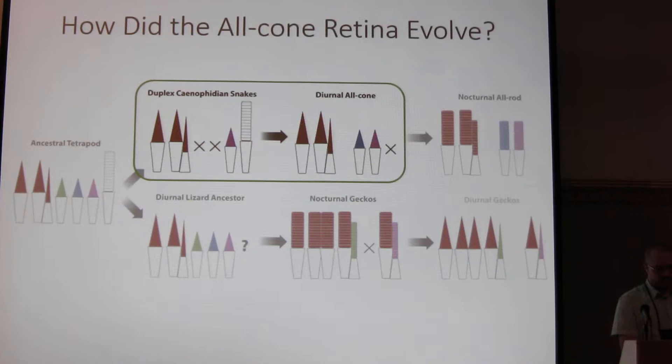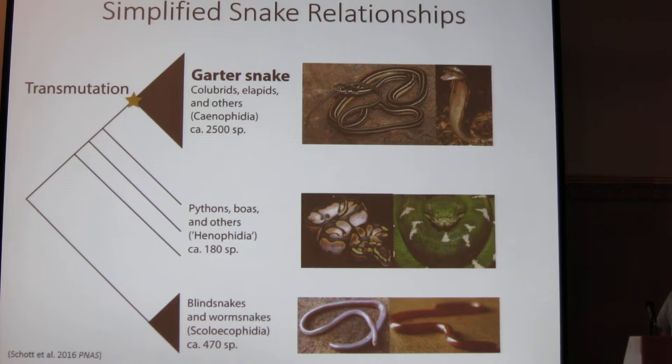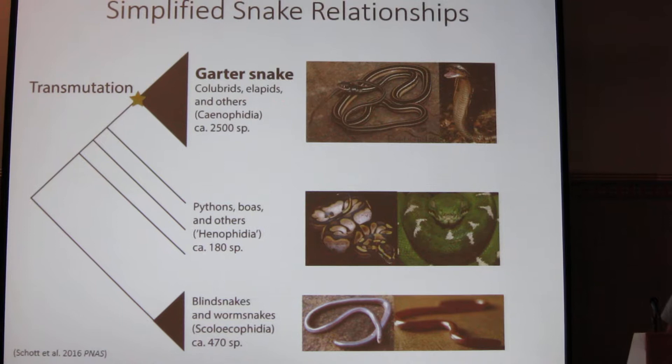In a very simplified view of snake biology, we can break them down into three main groups. We have the fossorial blind snakes and worm snakes, a grade of large and nocturnal species such as pythons and boas, and then we have the highly diverse clade Caenophidia where we observe this photoreceptor transmutation. The organism we'll be focusing on is a diurnal garter snake that has an all-cone retina.